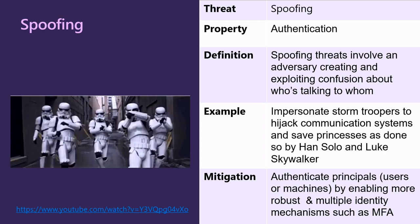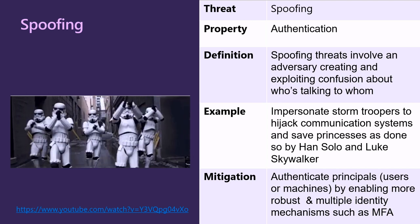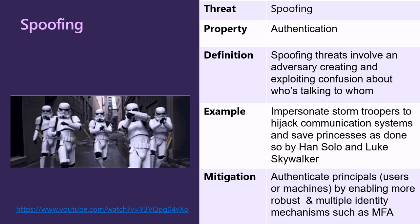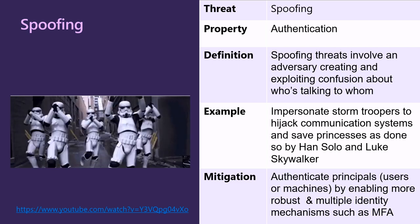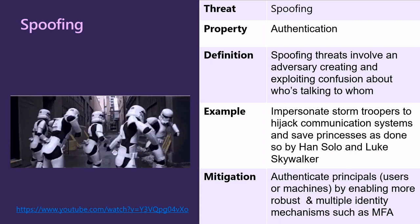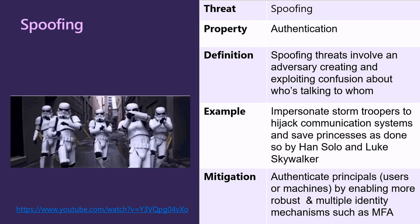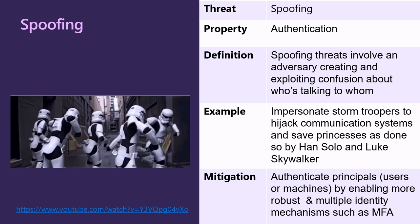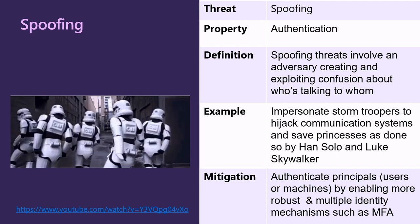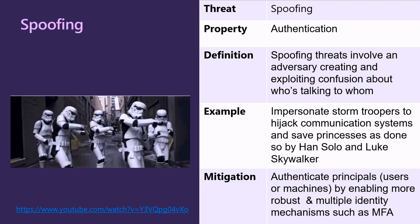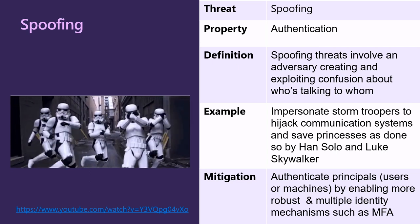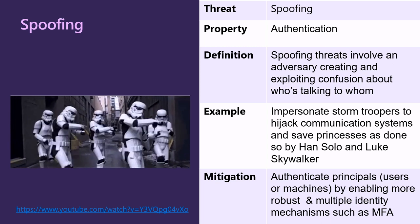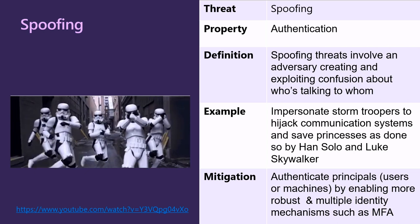Now let's apply the STRIDE framework. S stands for Spoofing — an authentication property. Spoofing threats involve an adversary exploiting confusion about who is talking to whom. In our example, impersonating stormtroopers to hijack communication systems and save princesses, as done by Han Solo and Luke Skywalker — and pretty much every Star Wars movie has someone impersonating someone. Mitigations against spoofing could include authenticating principals such as users or machines by enabling more robust, multiple identity mechanisms such as MFA.